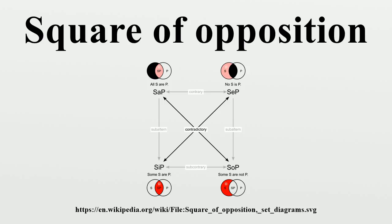Contrary statements are such that both cannot at the same time be true. Examples of these are the universal affirmative 'every man is white' and the universal negative 'no man is white'. These cannot be true at the same time. However, these are not contradictories because both of them may be false. For example, it is false that every man is white, since some men are not white. Yet it is also false that no man is white, since there are some white men.